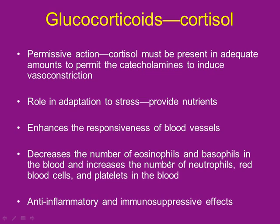Why do people take artificial cortisol? To suppress the immune system or suppress inflammation. When you take artificial cortisol — usually prednisone or hydrocortisone — it suppresses the immune system. Cortisol also increases red blood cells, helping carry more oxygen, but thickening the blood and putting more work on the heart. It also increases platelets, prepping you for clotting.